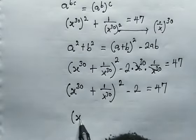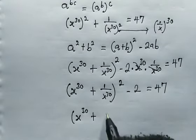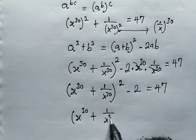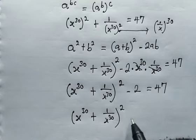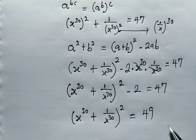Add 2 to both sides, we get x to the power of 30 plus 1 over x to the power of 30 squared. This equals 49.